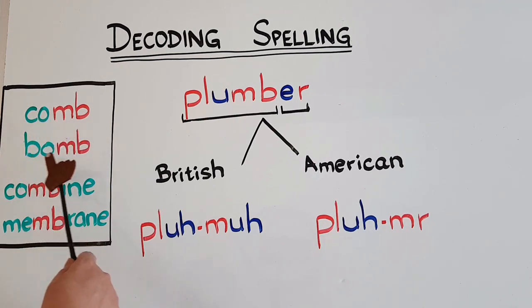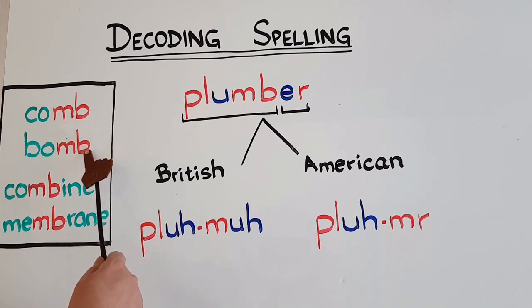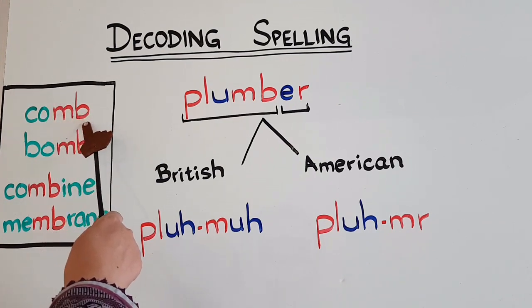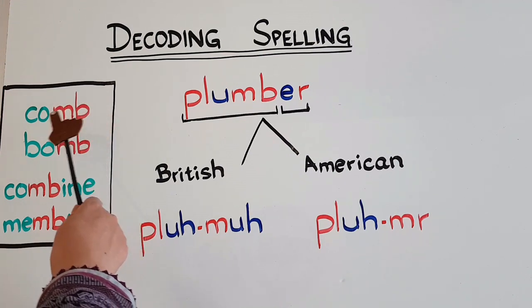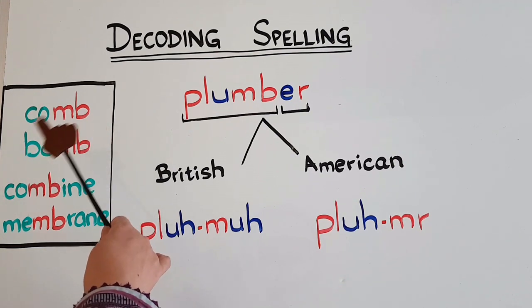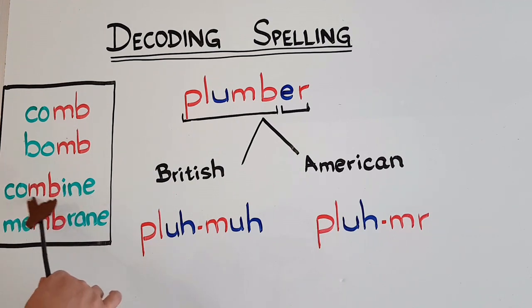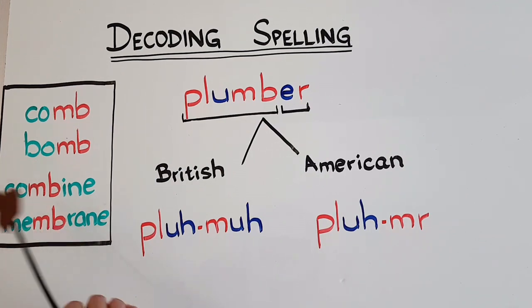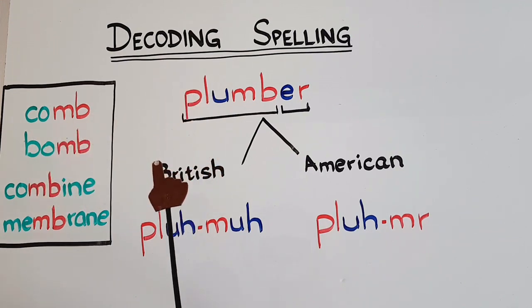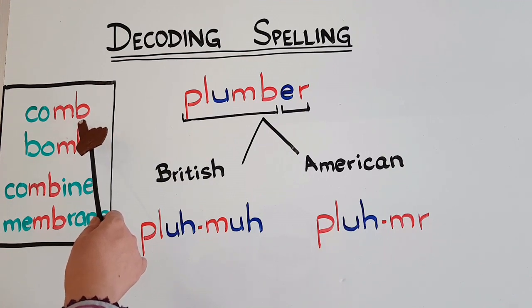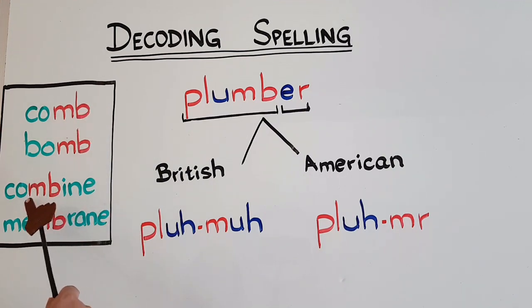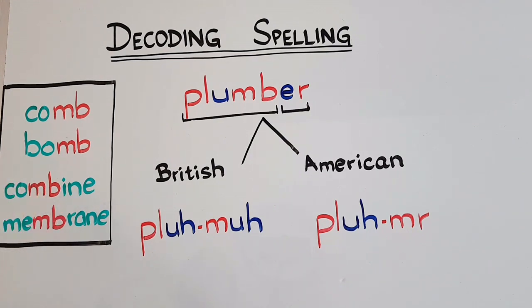Please look here - this word is 'calm' and this is 'bomb.' Did you hear the B sound at the end? No, because whenever B is followed by M, we do not pronounce B - like in calm, bomb, thumb, tomb. However, there are words where M is followed by B and B is still pronounced, like in 'combine' and 'membrane.' You can hear both the M and B sounds.